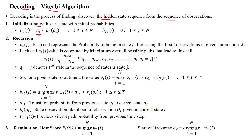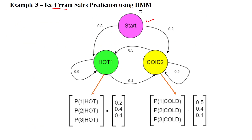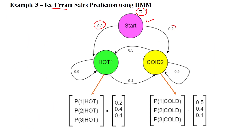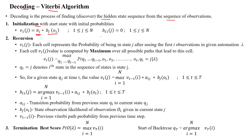The initial state value is given with pi. There is also the emission probability when moving to another state — for example, 0.8 — and the state transition probability 0.2. Here, b_t(o_t) is the state observation likelihood that the process reaches a particular state and gets some observation, meaning the number of ice creams consumed. And a_ij is the transition probability from the previous state to the current state, i.e., q_i given q_{i-1}.